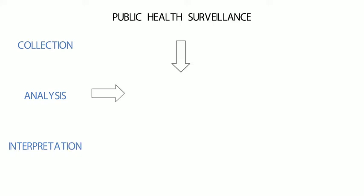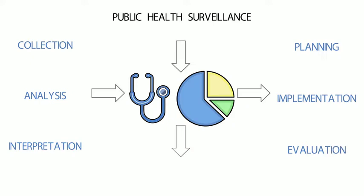Public health surveillance is the continuous, systematic collection, analysis and interpretation of health-related data needed for the planning, implementation and evaluation of public health practice.